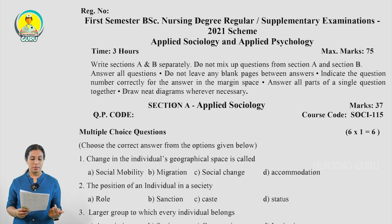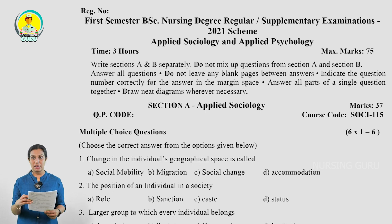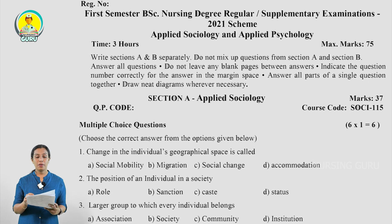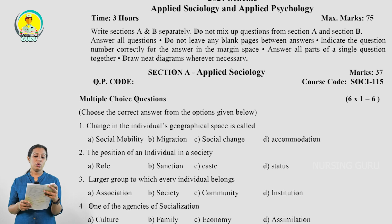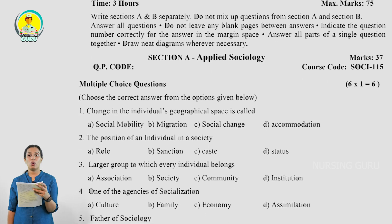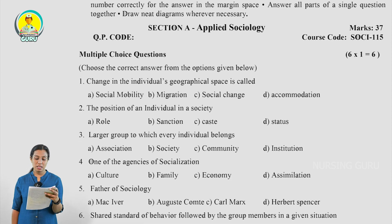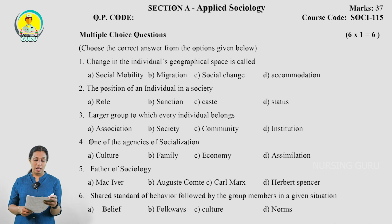The second university exam model question paper is Applied Sociology and Applied Psychology. Please note this is a model question paper only. The time duration is 3 hours for both sociology and psychology, and the maximum mark is 75. Instructions are the same: write Section A and B separately, do not mix up questions, answer all questions, do not leave blank pages, indicate question numbers in margin, answer all parts of a single question together, and draw neat diagrams wherever necessary. Section A is Applied Sociology.